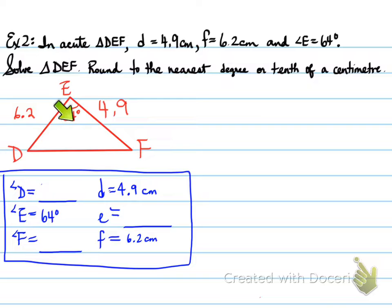So now we know what pieces we need. We have two sides and a contained angle, and guess what? Because of two sides and a contained angle, we're going to use cosine law.